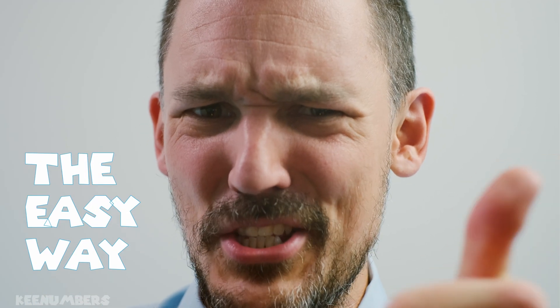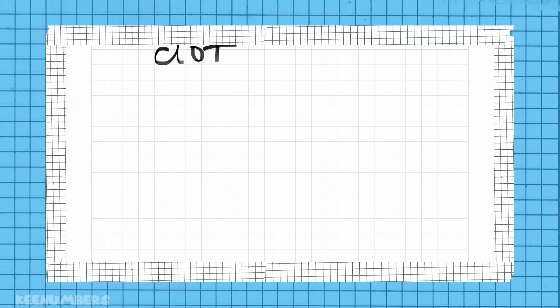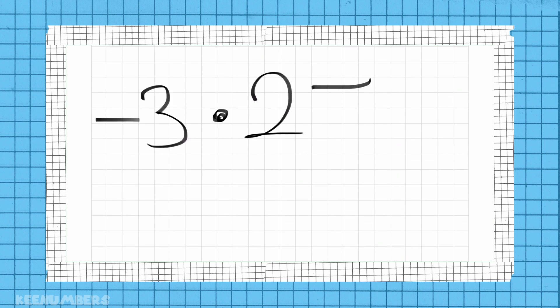Let's do this the easy way. Negative 3 dot 2. That is equal to, not Luke Skywalker, but negative 6. So that dot there just means times.